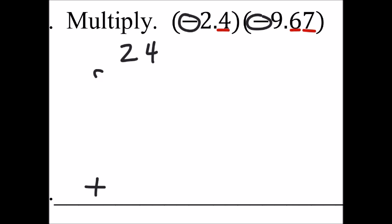Three twenty-four times nine sixty-seven. Let's see if I give myself enough space. Seven times four is twenty-eight. Seven times two is fourteen. Plus the two is sixteen.